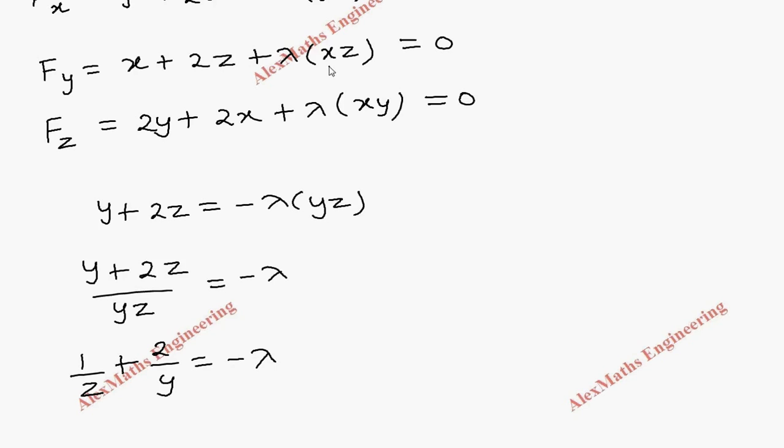In the same way, in the second equation if I divide by xz, I will get 1/z + 2/x = -λ after canceling z we're left with x. In the same way from third equation we get 2/x + 2/y = -λ.